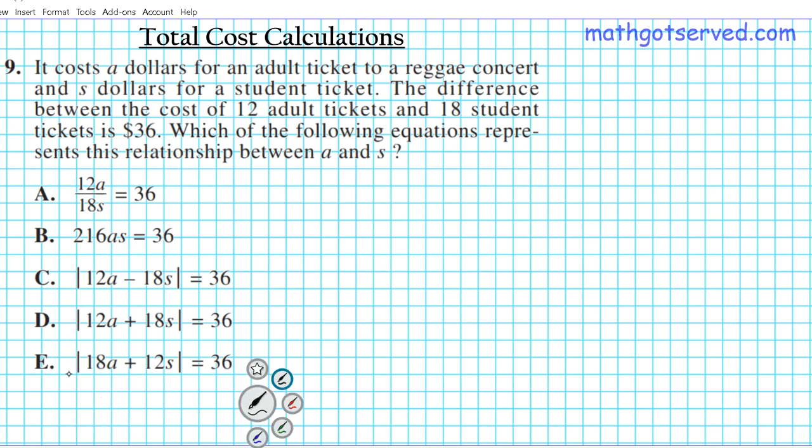Question nine reads: it costs a dollars for an adult ticket to a reggae concert and s dollars for a student ticket. The difference between the costs of 12 adult tickets and 18 student tickets is thirty six dollars. Which of the following equations represents this relationship between A and S?